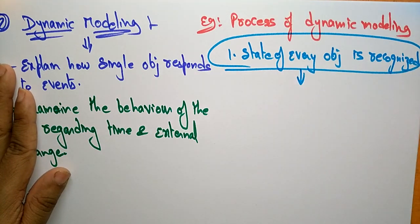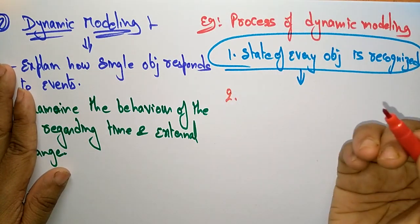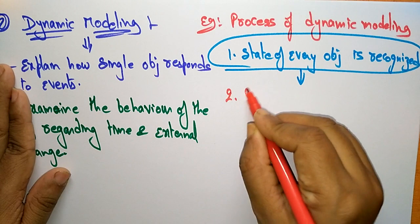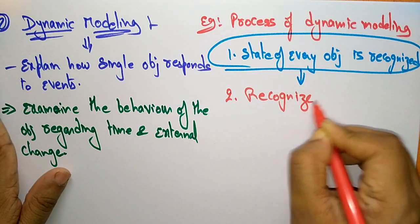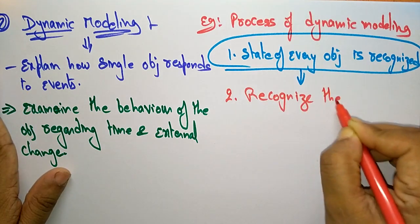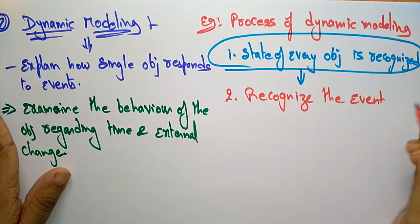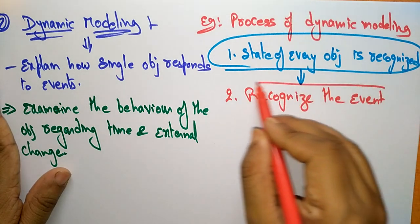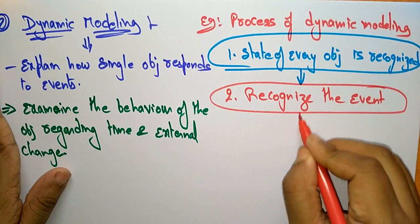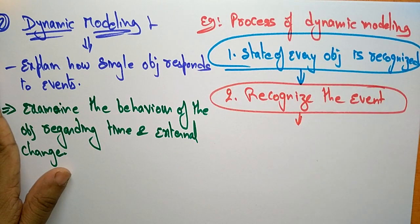The second step is you have to recognize the event. You need to recognize the event because dynamic modeling explains how a single object responds to events, so you have to recognize those events.